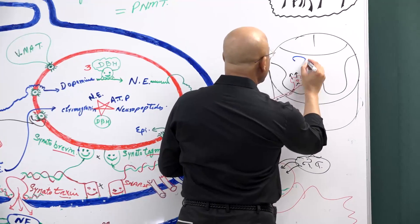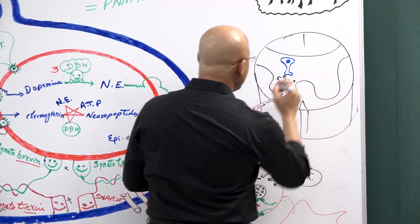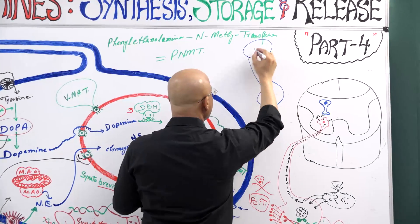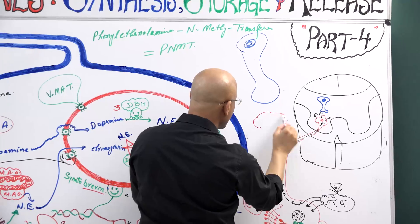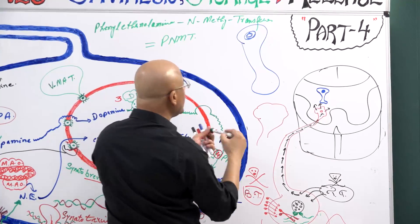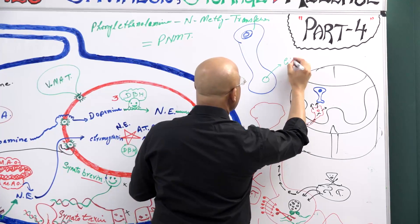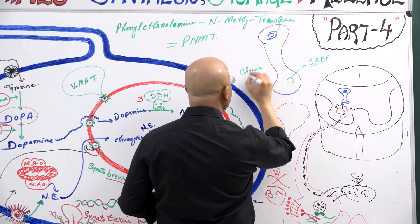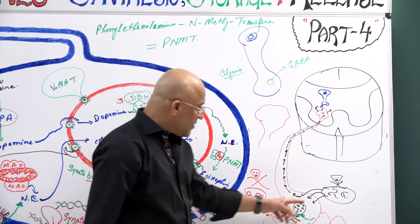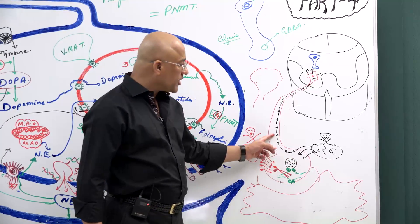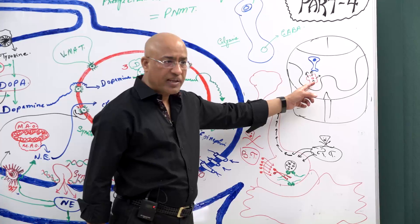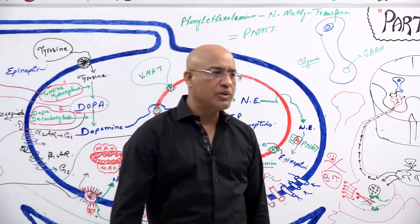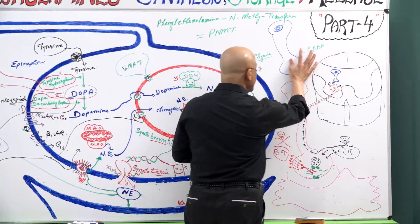Once tetanus toxin reaches the spinal cord, it is released and enters into special inhibitory interneurons. These inhibitory interneurons use either gamma-aminobutyric acid (GABA) — so we call them GABAergic neurons — or they use glycine, called glycinergic neurons. The tetanus toxin enters into these inhibitory interneurons in the spinal cord or brainstem.